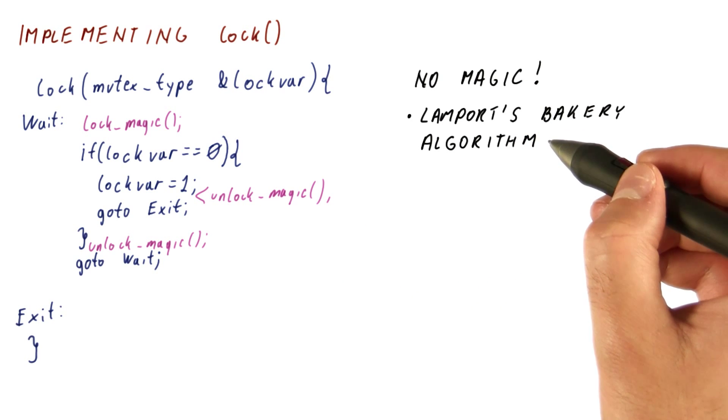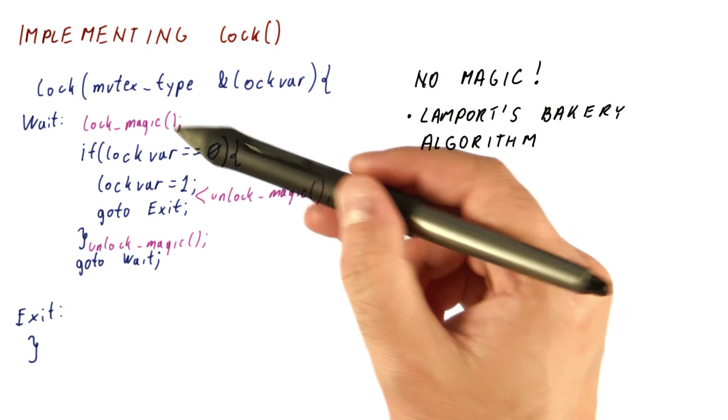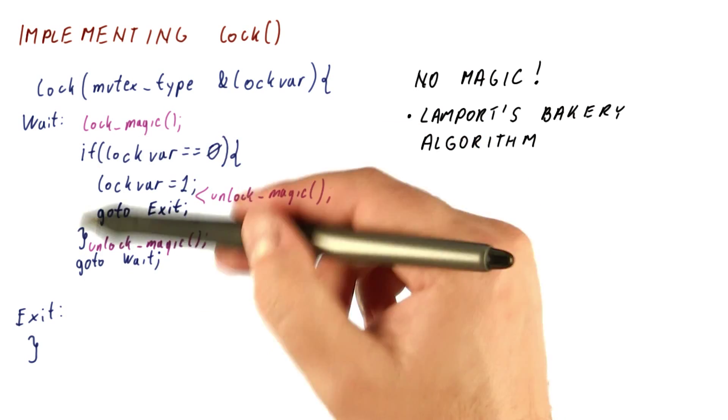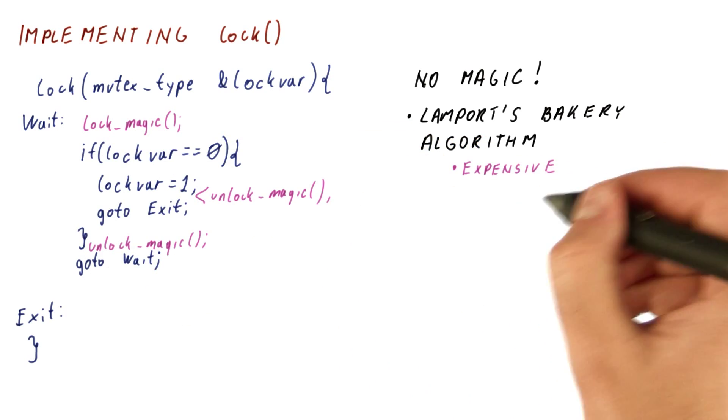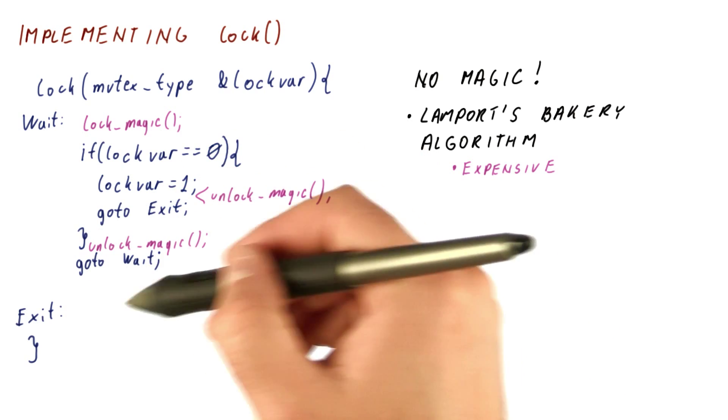But these algorithms tend to be relatively complicated, and just a simple lock function would take tens of instructions to do. So doing this is expensive. It makes the lock function slow.